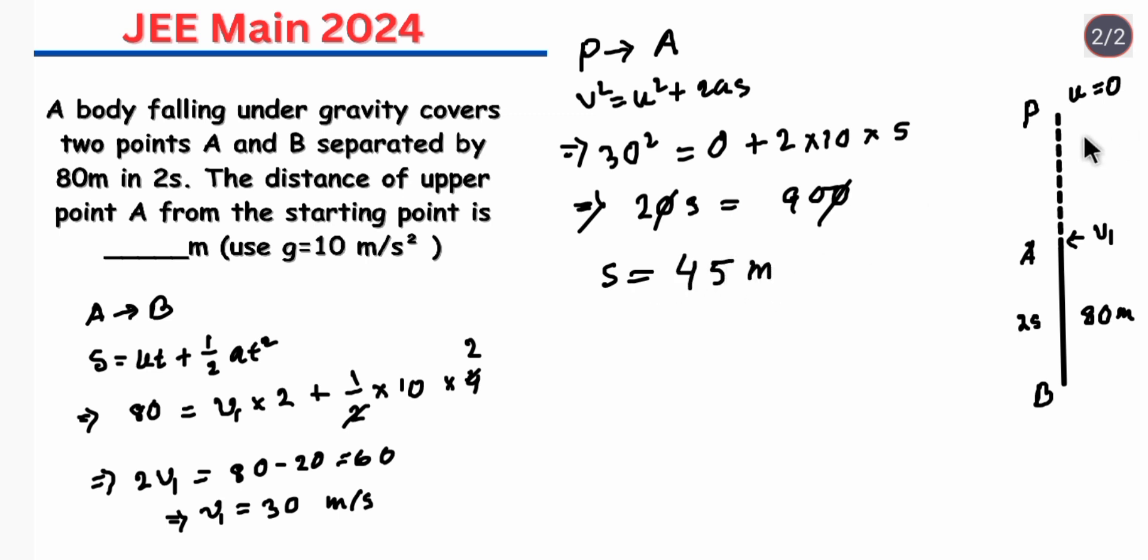So the distance of upper point A from the starting point is 45 meter. So this is our solution. Thanks for watching.